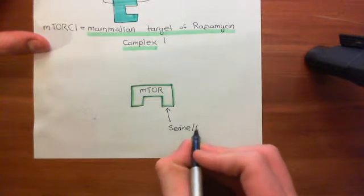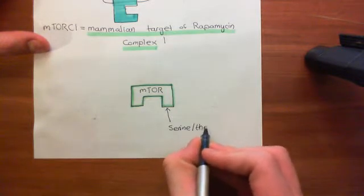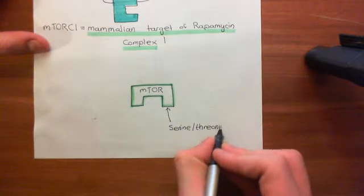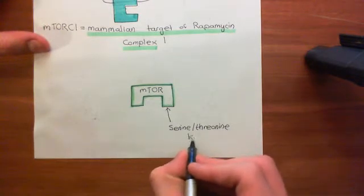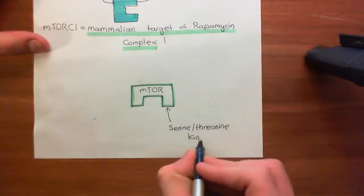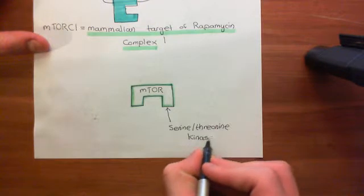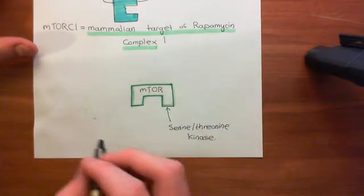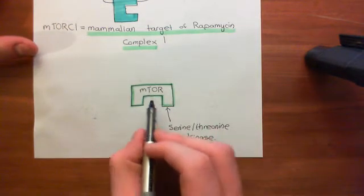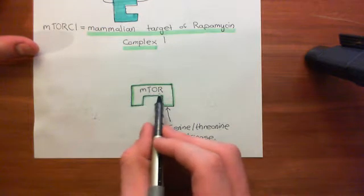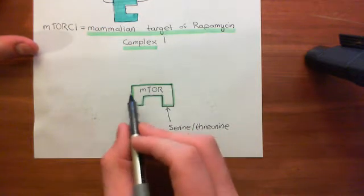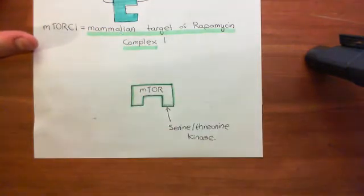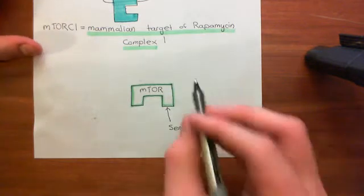So now let's look at the accessory proteins that are associated with the mammalian target of rapamycin enzyme in mTORC1.